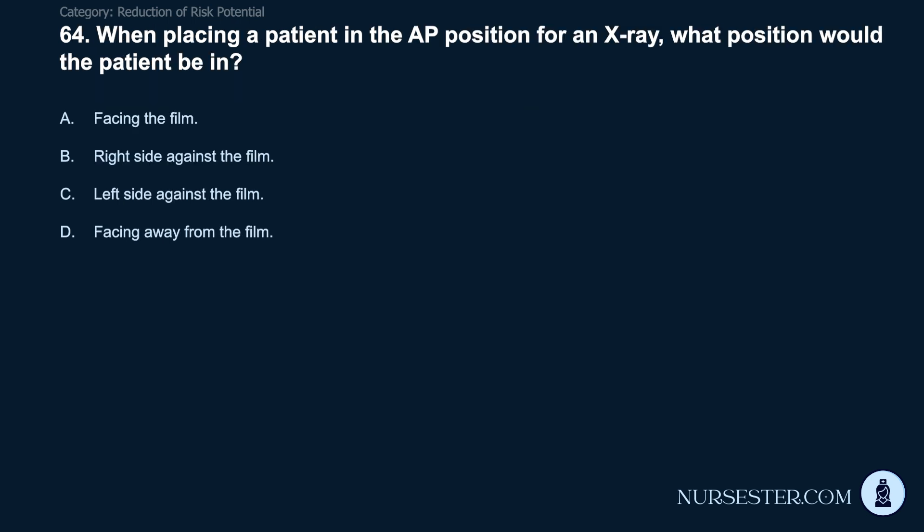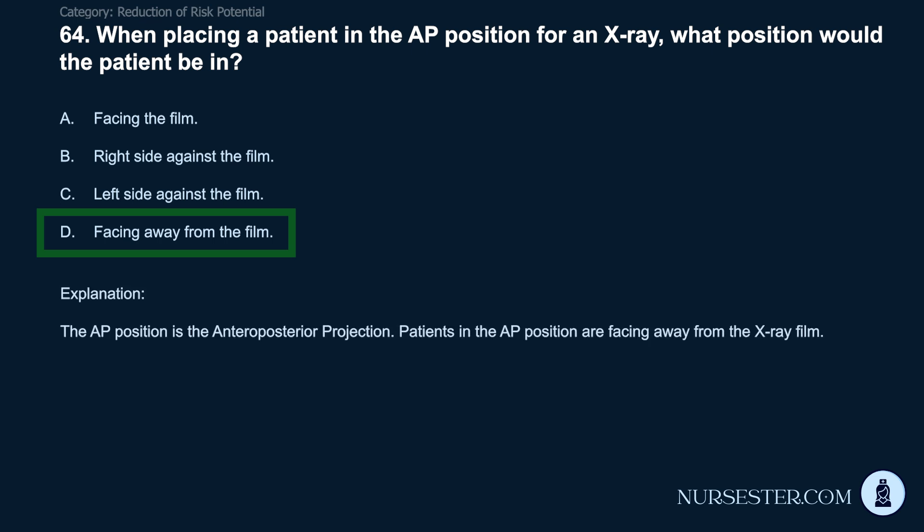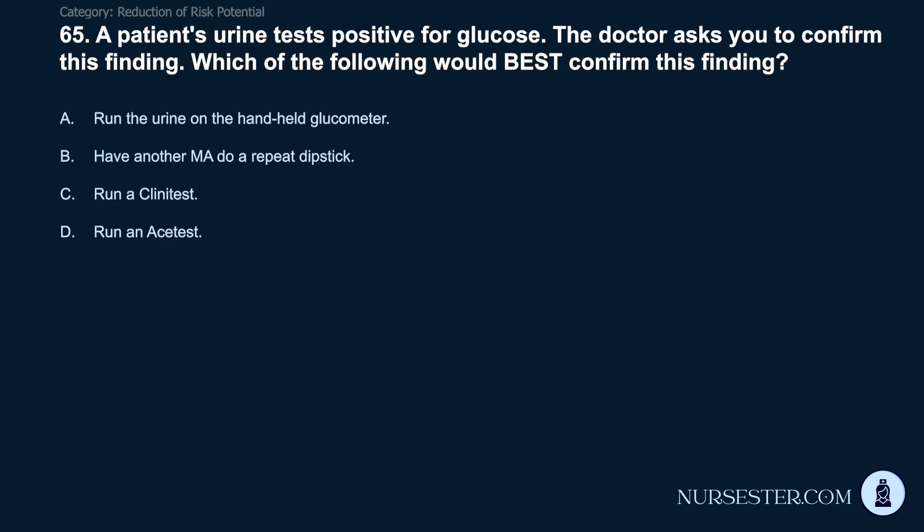Question 64: When placing a patient in the AP position for an x-ray, what position would the patient be in? A) Facing the film. B) Right side against the film. C) Left side against the film. D) Facing away from the film. Correct answer: D. Facing away from the film. The AP position is the anteroposterior projection. Patients in the AP position face away from the x-ray film.